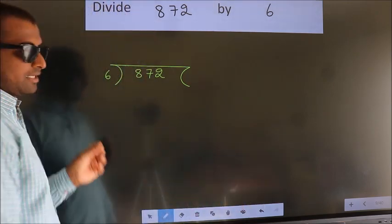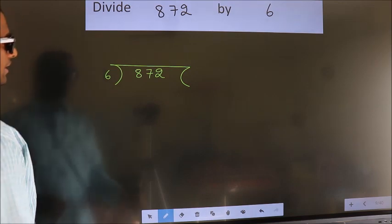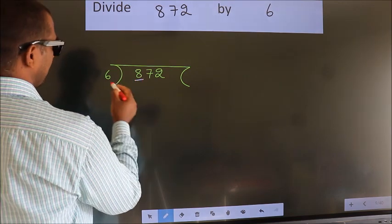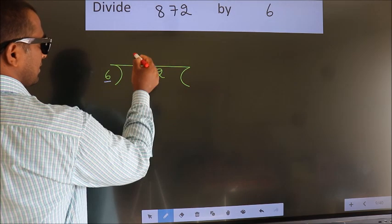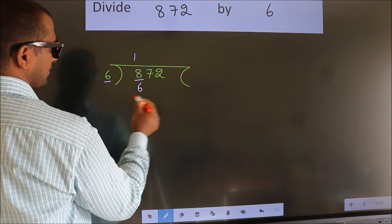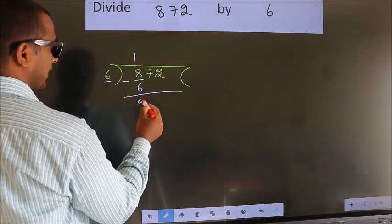This is your step 1. Next. Here we have 8, here 6. A number close to 8 in 6 table is 6 once 6. Now we should subtract. We get 2.